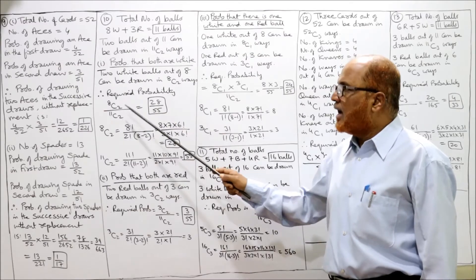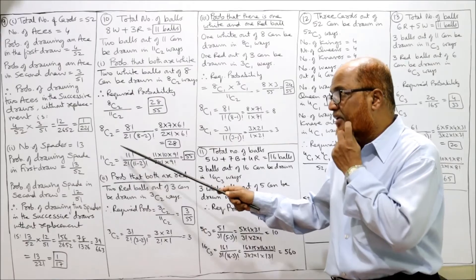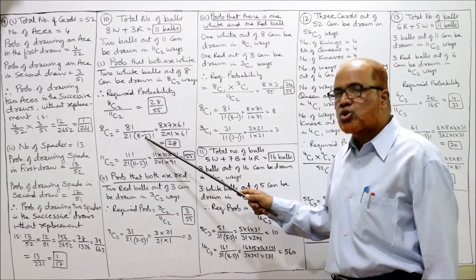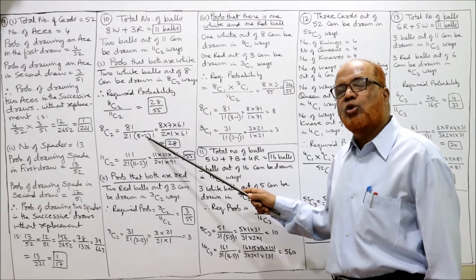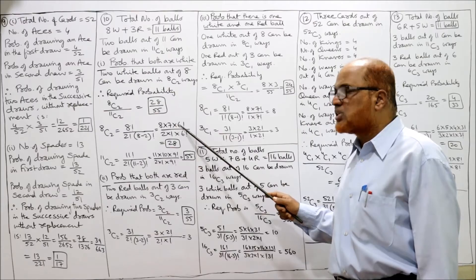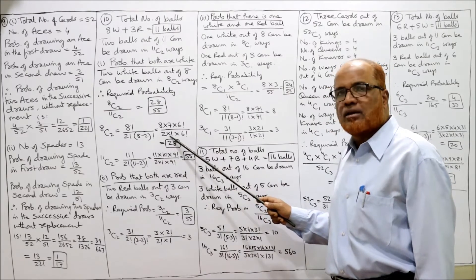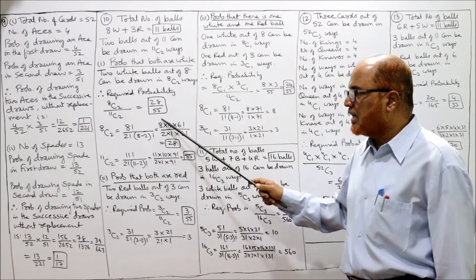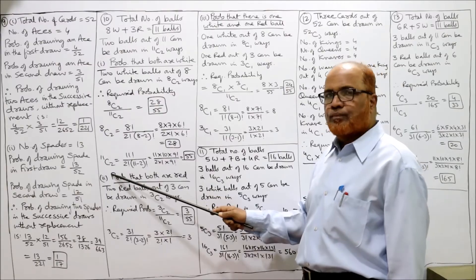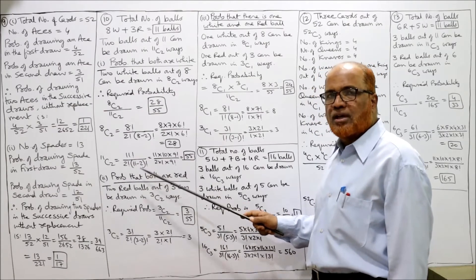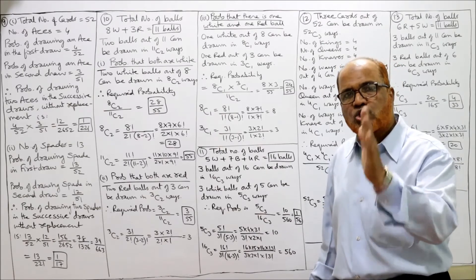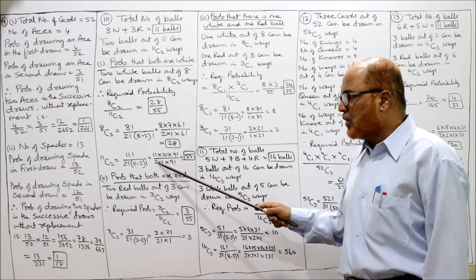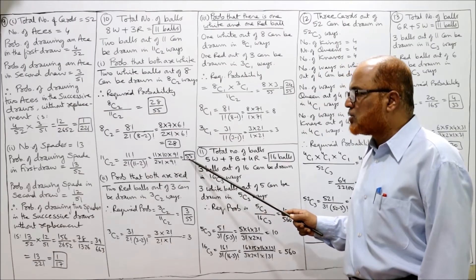8C2 = 28 and 11C2 = 55. How? 8C2 = 8! / (2! × 6!) = (8 × 7 × 6!) / (2 × 1 × 6!) = 56/2 = 28. For 11C2 = 11! / (2! × 9!) = (11 × 10 × 9!) / (2 × 1 × 9!) = 110/2 = 55. So probability that both balls are white = 28/55.